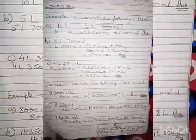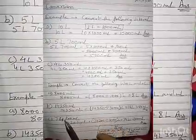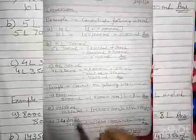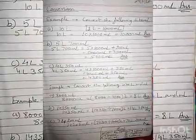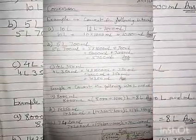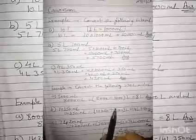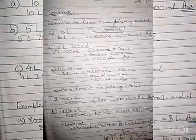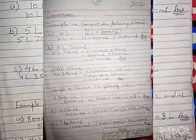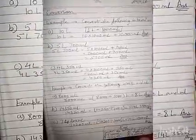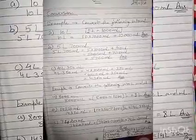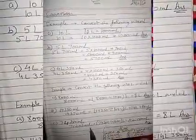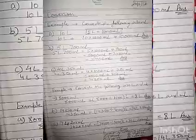First number question: 8000 milliliter. So litres se milliliter me change karna ke liye hum log multiply karti thi. Milliliter se litre me change karna ke liye divided by 1000. Okay, now 8000 milliliter divided by 1000, answer 8 litre.